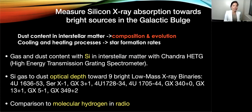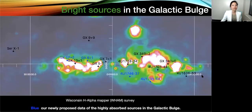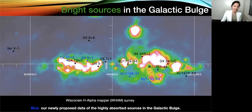We measure the silicon gas-to-dust optical depths towards bright low-mass X-ray binaries as light sources. Later, we compare them to the molecular hydrogen in radio. This background shows the Wisconsin H-Alpha Mapper Survey, and the sources show the different directions we are looking at in order to measure the silicon gas and dust optical depths. These are the sources in our survey.